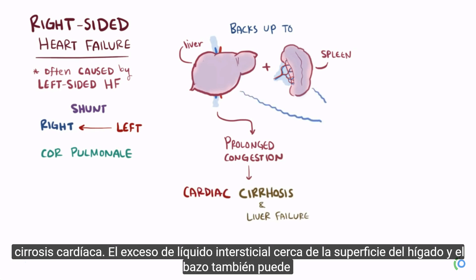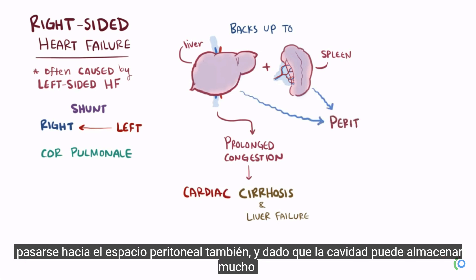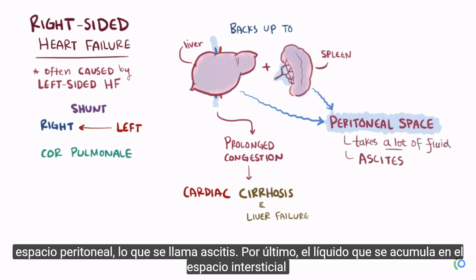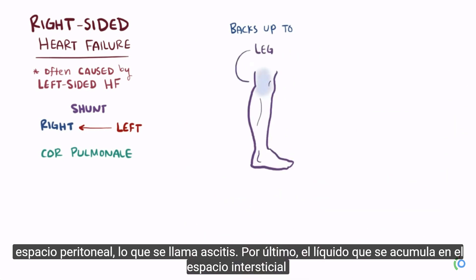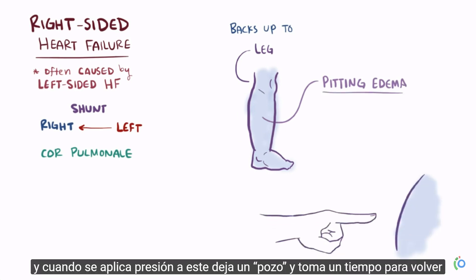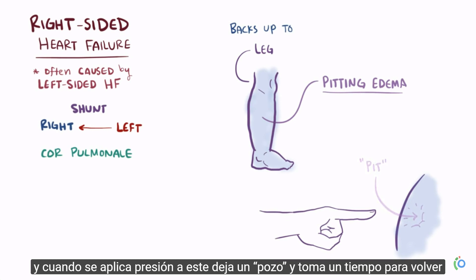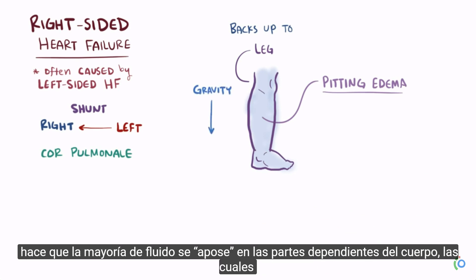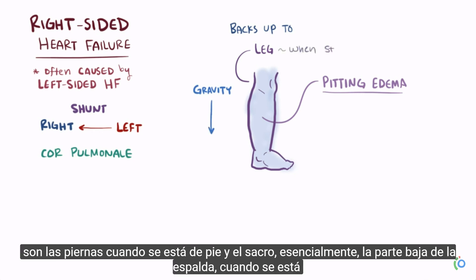Excess interstitial fluid near the surface of the liver and spleen can also move into the peritoneal space. Since that cavity can accommodate a lot of fluid before pressure increases, a large amount can accumulate — this is called ascites. Finally, fluid backing up into the interstitial space of the soft tissue of the legs causes pitting edema, where the tissue is visibly swollen and leaves a pit when pressed. This generally affects the legs when standing, or the sacrum — essentially the lower back — when lying down.